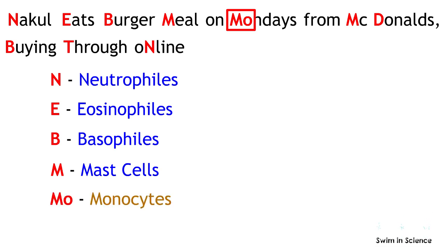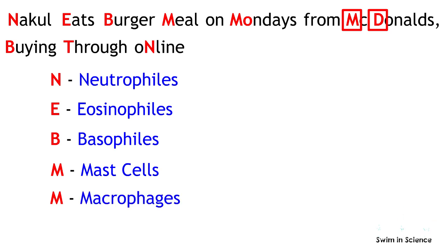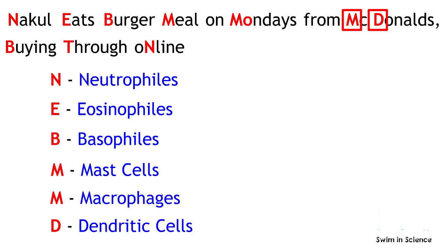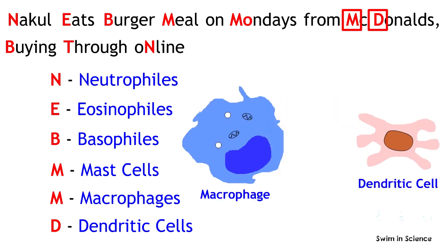Also, we can consider O as budding — that is, a daughter cell — which is followed by M and T, representing macrophage and dendritic cell respectively. Basically, a monocyte differentiates into a macrophage and a dendritic cell to elicit an immune response.